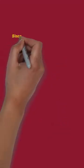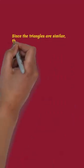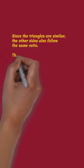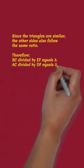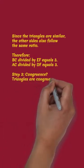Since the triangles are similar, the other sides also follow the same ratio. Therefore, AB divided by DE equals 3, and AC divided by DF equals 3.